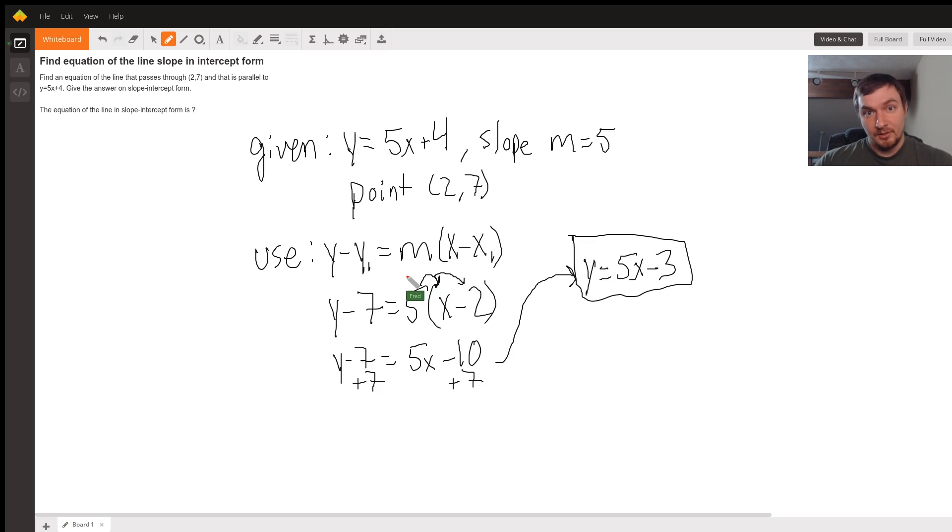In our case, x1 is equal to 2 and y1 is equal to 7. So we plug those numbers in, 2 and 7, and we end up with y minus 7 equals 5 times the quantity x minus 2.